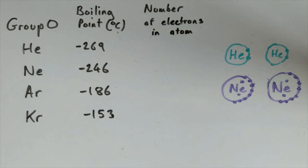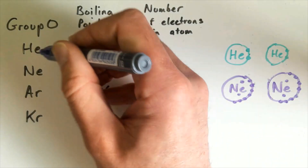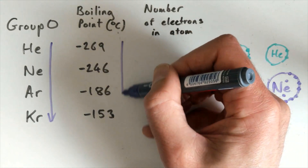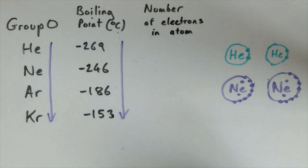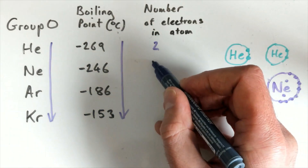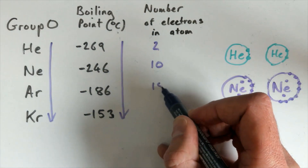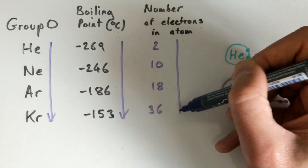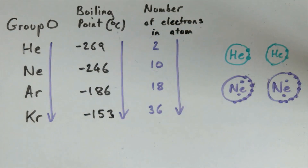London dispersion forces can help explain the trends in boiling points of the noble gases as you go down group zero. Going down from helium to krypton, the boiling point for these elements increases. To help explain this, we need to calculate the total number of electrons present in each atom: helium has 2, neon has 10, argon has 18, and krypton has 36. So as you go down the group from helium to krypton, the number of electrons increases.